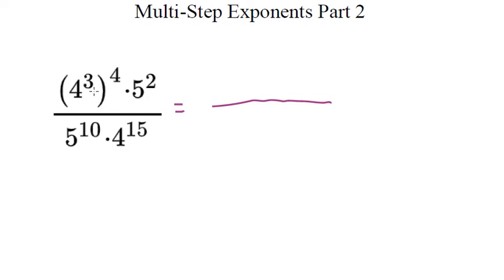The only difference here is that in the numerator we see these parentheses. When we see something to the 3rd power raised to the 4th power, that's taking the whole piece and raising it to the 4th power. When we have an exponent being raised to another power, that's called the power-to-a-power rule, and we do something different with our exponents — we don't add them anymore, we actually multiply them. It's only in this one instance where we have a power being raised to a power.